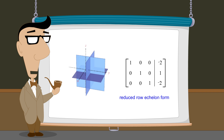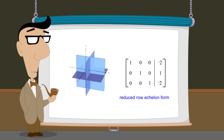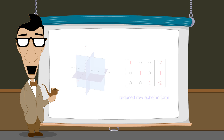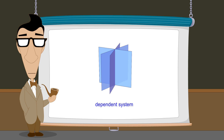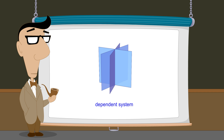If the system has a single unique solution, each plane will end up oriented perpendicular to one of the three axes, allowing the x, y, and z values of the solution to be read directly from the matrix. In the next lectures, we will see what it means for a system of linear equations to be dependent and what happens to dependent equations and planes during the process of Gauss-Jordan elimination.